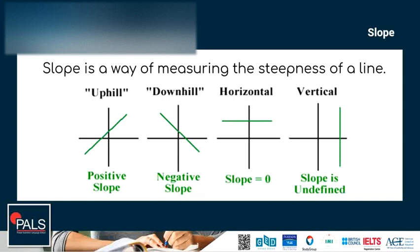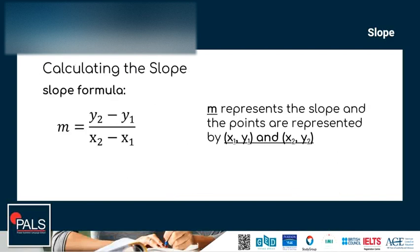To calculate the slope, we can use the formula M equals y-sub-2 minus y-sub-1 all over x-sub-2 minus x-sub-1. M represents the slope, and the points are represented by x-sub-1 and y-sub-1, and x-sub-2 and y-sub-2.